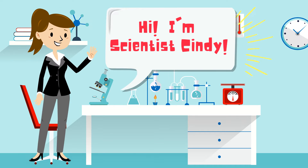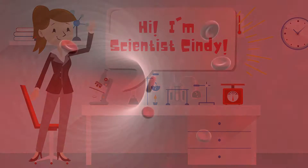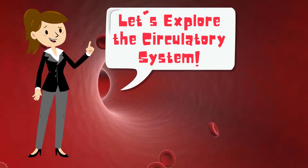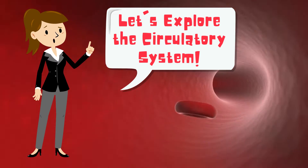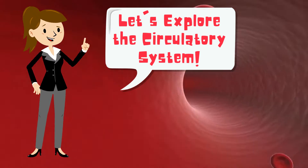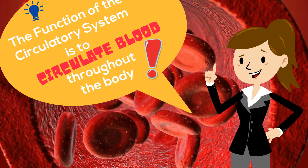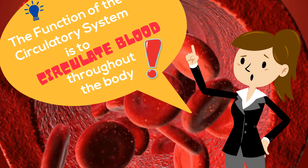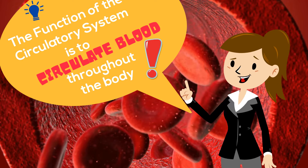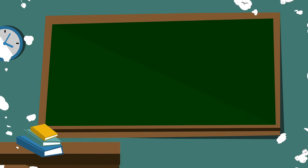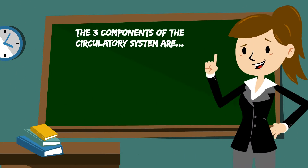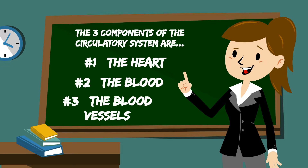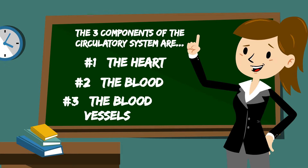Hi, I'm scientist Cindy. Let's explore the circulatory system. The function of the circulatory system is to circulate blood throughout the body. The circulatory system includes the heart, the blood, and the blood vessels.